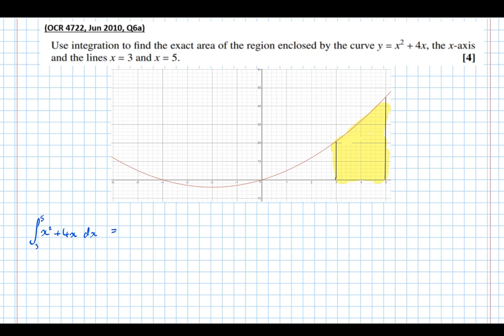So integrating, that gives us a third x cubed plus 4x squared over 2, between 5 and 3, equals a third x cubed plus 2x squared, simplifying it, between 5 and 3.